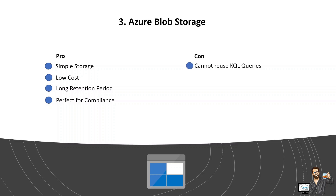Now the cons: you can't reuse KQL queries — your existing KQL queries cannot be reused with Blob Storage. It is also extremely difficult to search for specific data properties. The Sentinel data stored in Blob Storage will be in JSON files residing in multiple folders organized by hour, day, and week, which makes it very difficult to search for specific properties or trends.